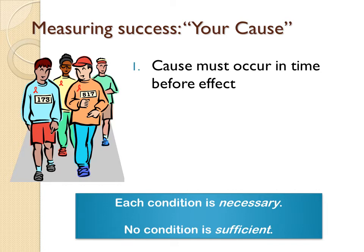This sounds pretty straightforward, but it is really hard to demonstrate sometimes. Think about sickness — when does somebody get sick? Are you ill when the doctor diagnoses you? Probably before then. Were you ill when you first felt symptoms? Maybe before then. What if you have a disease that gets triggered later in life, but you were born with a disposition towards it? When did it start? So you can see that it's very difficult to figure out timing.